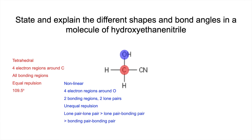We're going to give the full repulsion strength order: lone pair–lone pair repulsion is greater than lone pair–bonding pair, which is greater than bonding pair–bonding pair. Because we've got four electron regions around the oxygen, our starting angle would be 109.5 degrees, but then we have to take off five degrees for the extra repulsion from those two lone pairs, so the angle goes down to 104.5 degrees.